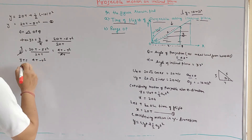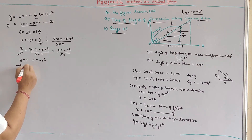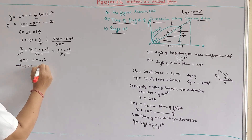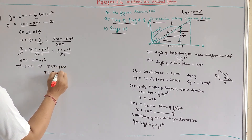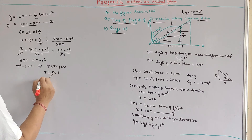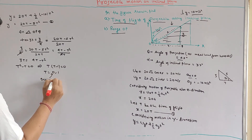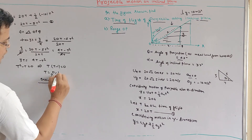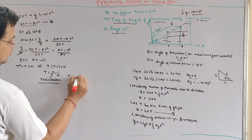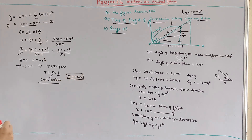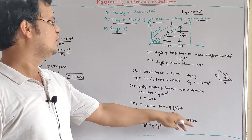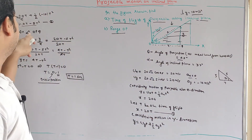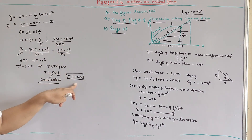So t equals 0 or t equals 1. t equals 0 represents the initial position of the projectile. Therefore, the time of flight is t equals 1 second. Notice that we did not use the standard time-of-flight formula — instead, we used motion in the x-direction, motion in the y-direction, and the geometry of triangle OPQ to arrive at the same result.